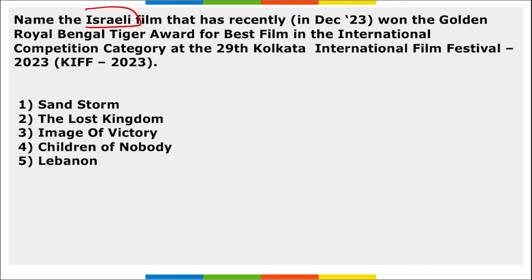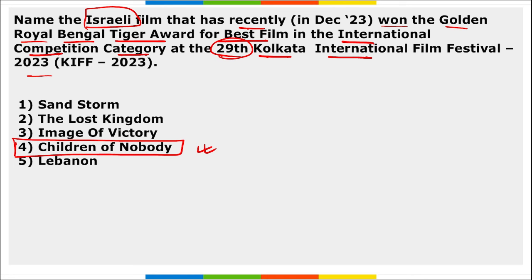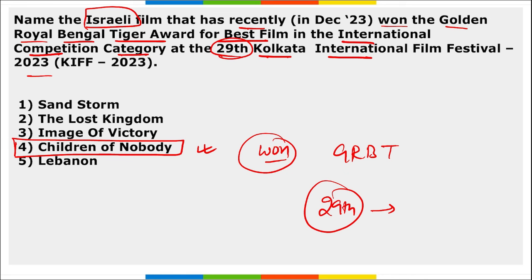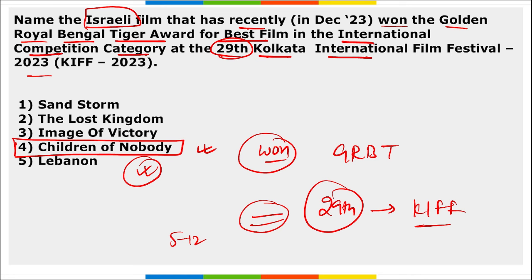Name the Israeli film that has recently won the Golden Royal Bengal Tiger Award for Best Film in the international competition category at the 29th Kolkata International Film Festival 2023. It is 'Children of Nobody.' This Israeli film won the Golden Royal Bengal Tiger Award for Best Film in the international competition category at the 29th Kolkata International Film Festival, held from 5th to 12th December in Kolkata, West Bengal.